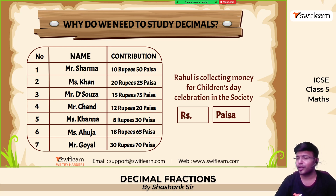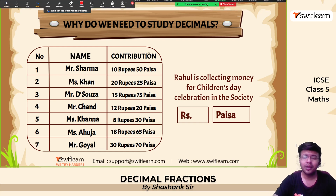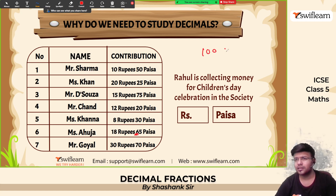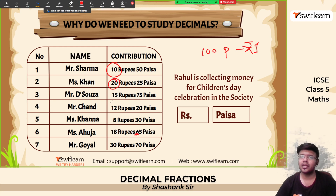Rahul is collecting money for a Children's Day celebration in the society and everyone paid respective amounts in rupees. Now, before, there used to be paisas. Nowadays you may not know what a paisa is — a paisa is a subunit of rupees. 100 paisas equals one rupee. Now calculate the total amount: 10, 30, 45, 55, 57...